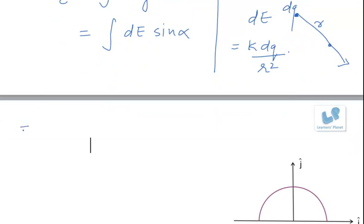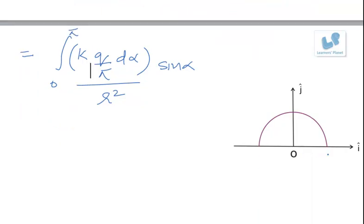Now if you substitute the values, dE is k times dq, which is (q/π) dα, divided by r² times sin α. And the limits of angle α will be 0 to π - for this charge the angle is zero, and for this elementary charge the angle is π.